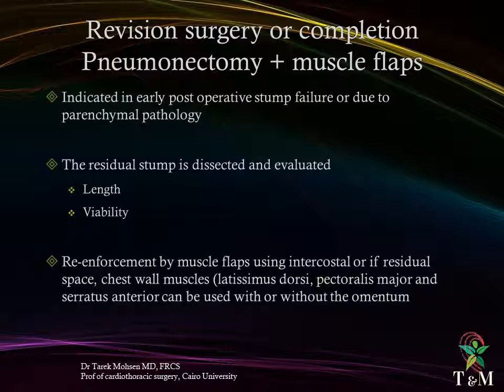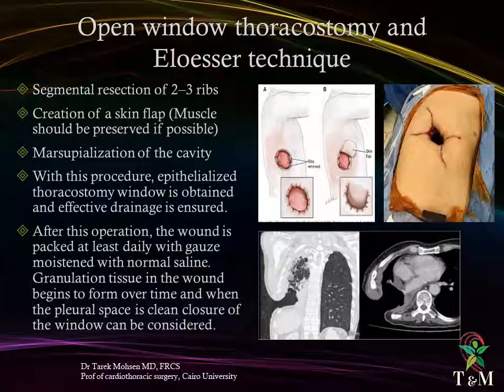The residual stump is dissected and evaluated for its length and viability. With a short or non-viable stump, completion pneumonectomy is performed. Reinforcement by muscle flaps using intercostal muscles is standard; if residual space exists, chest wall muscles with or without omentum are used. Open window thoracostomy — the Eloesser technique — involves classic removal of two to three rib segments, creation of a skin flap with preservation of muscles, and muscle pedicle flap filling of the cavity, resulting in an epithelialized thoracostomy window with effective drainage.